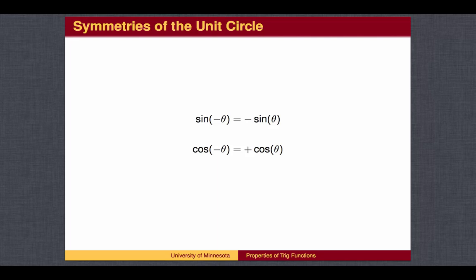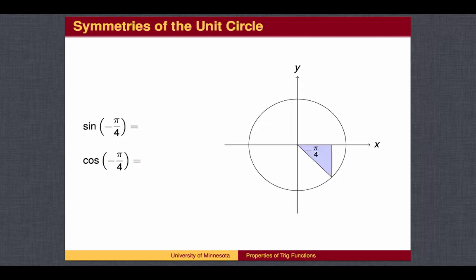We should have instead that the cosine of negative theta equals the cosine of theta. These two statements are correct. Here is an example of how we can use our knowledge of first quadrant positive angles to help us find values for negative angles. The sine of negative π over 4 is the sine of a fourth quadrant angle, and therefore should be a negative number, specifically negative square root 2 over 2.